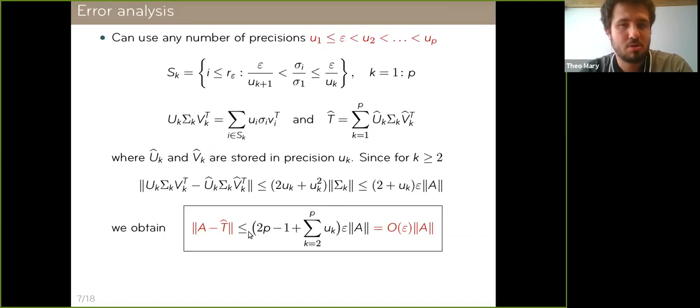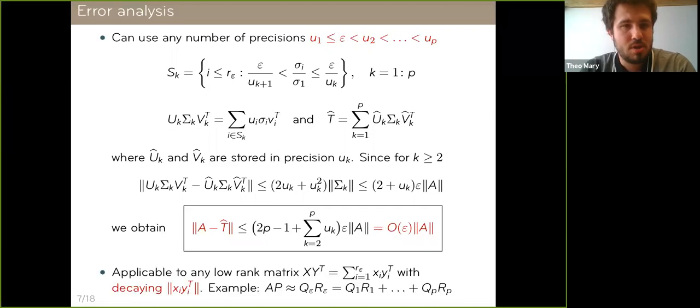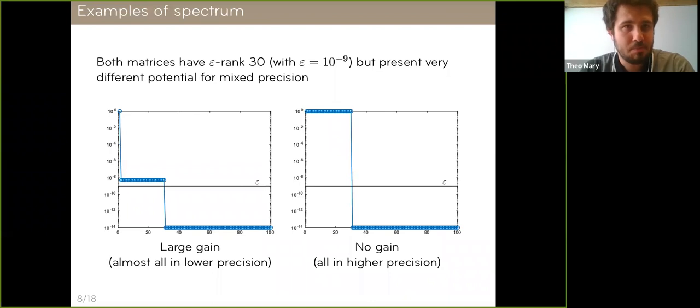If we sum these errors for all of the p groups, we will obtain an overall approximation t hat that satisfies the relative accuracy of order epsilon. And the constant here in this big O is going to be small. It's going to depend on the number of precisions. For example, with two precisions, this is going to be a constant three. With three precisions, it's five. So it's clear it's a small constant. And so this proves that we can use precisions potentially much lower than epsilon and still get a result that is of order epsilon. I want to also emphasize that I've used the SVD here, but actually, this is applicable to many other kinds of low rank decompositions. What we really need for this to work is some decay property. We need to be able to partition the decomposition into several groups. So for example, QR, a rank revealing QR would also work.